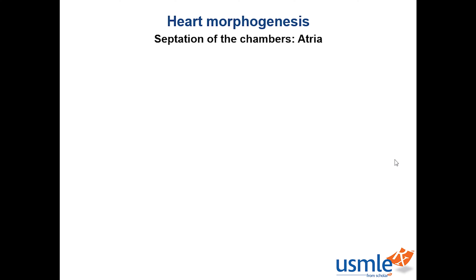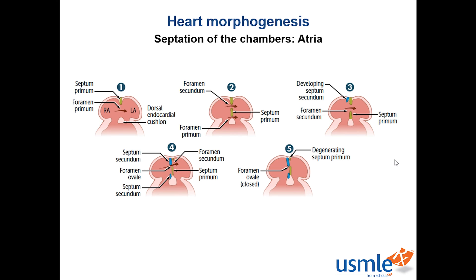Let's move on to chamber septation. The names of the structures involved in the development of the atria will guide your understanding. The septum primum is the first septum — the first segment of tissue that begins to grow down from the top of the atria towards the endocardial cushion in the atrioventricular canal. The septum primum has now created a smaller communication between the left and right atrium called the foramen primum. Foramen and osteum both mean holes. As the septum primum expands towards the endocardial cushion, the upper portion begins to degenerate, forming the foramen secundum. Eventually, the septum primum reaches the endocardial cushion and fuses.